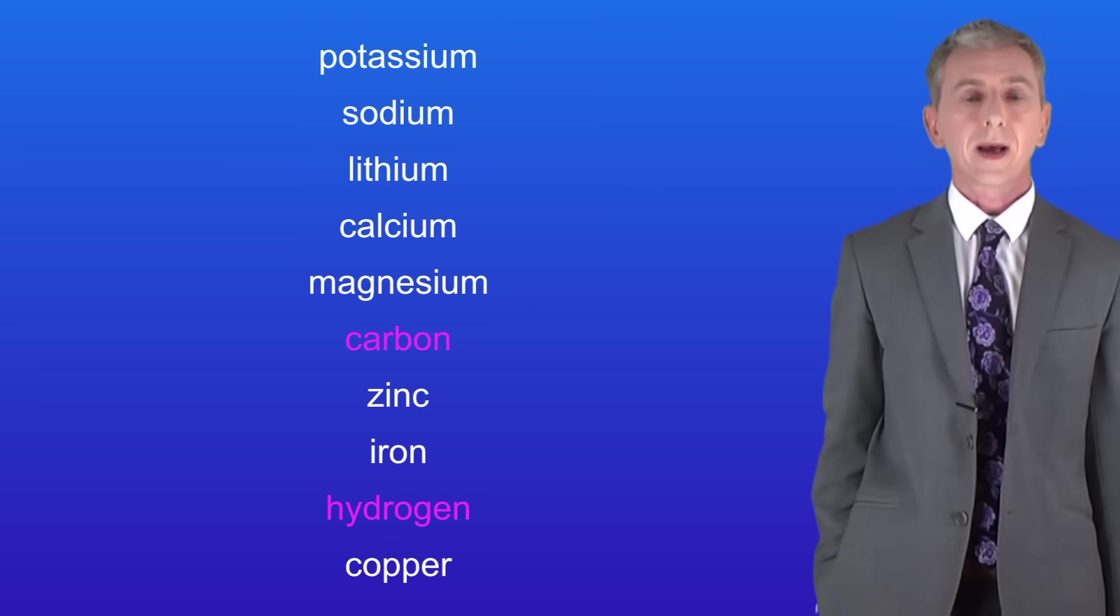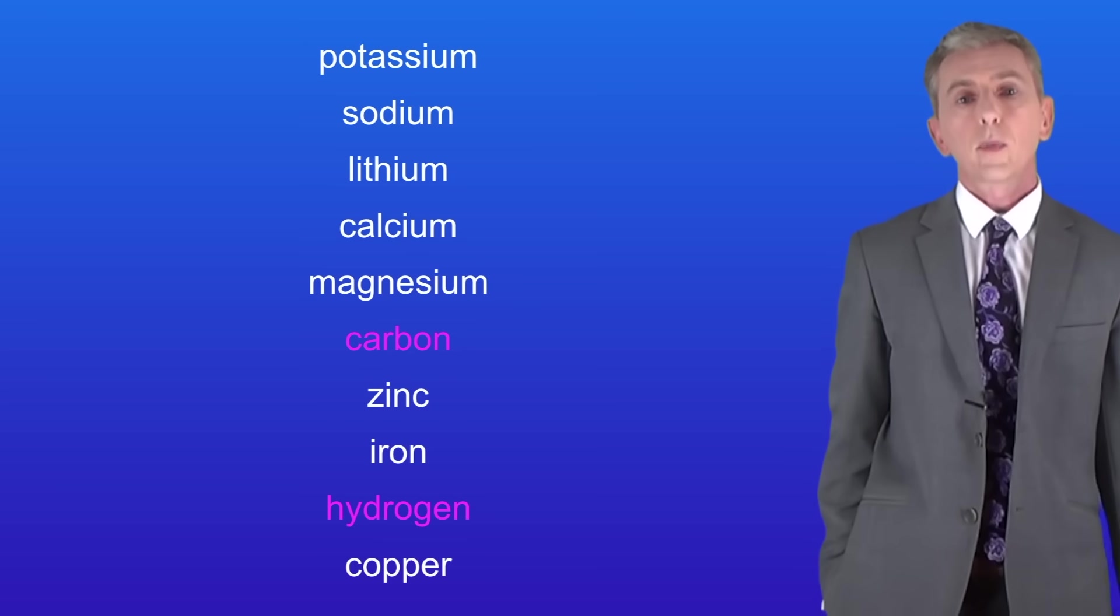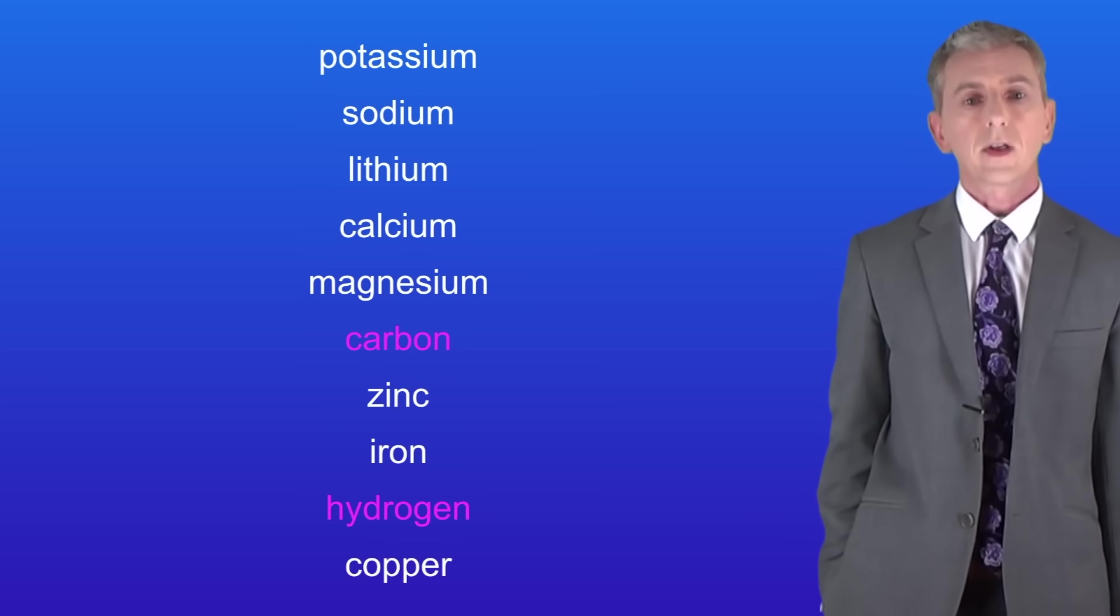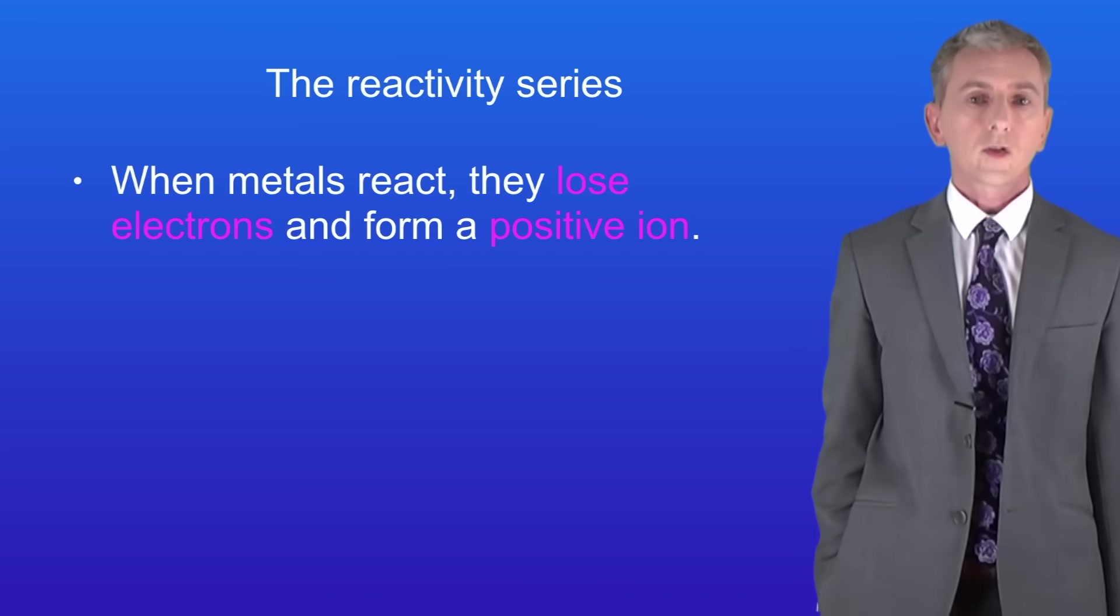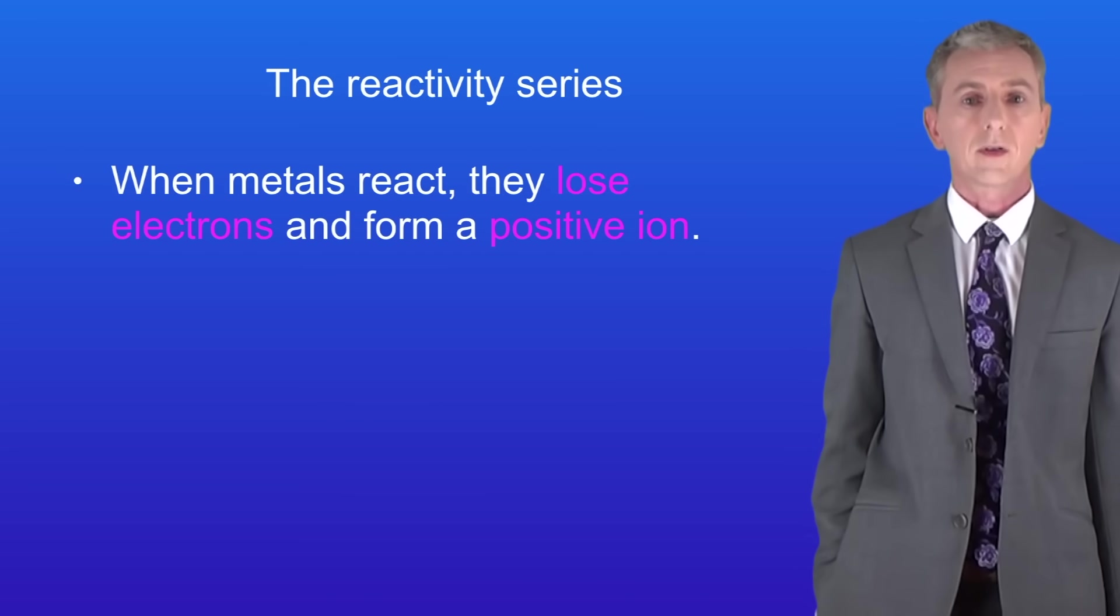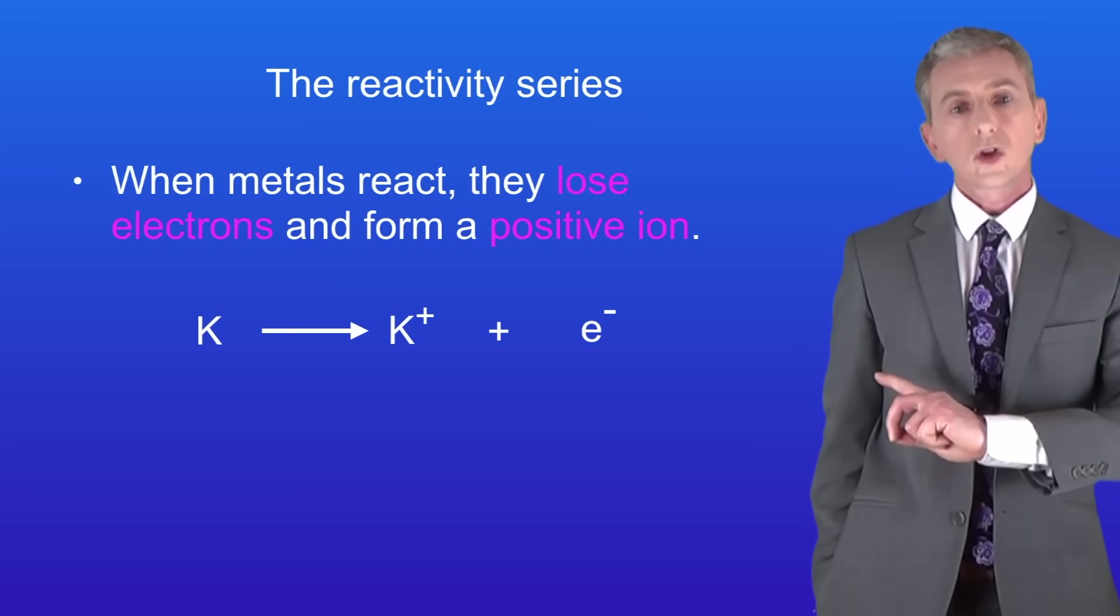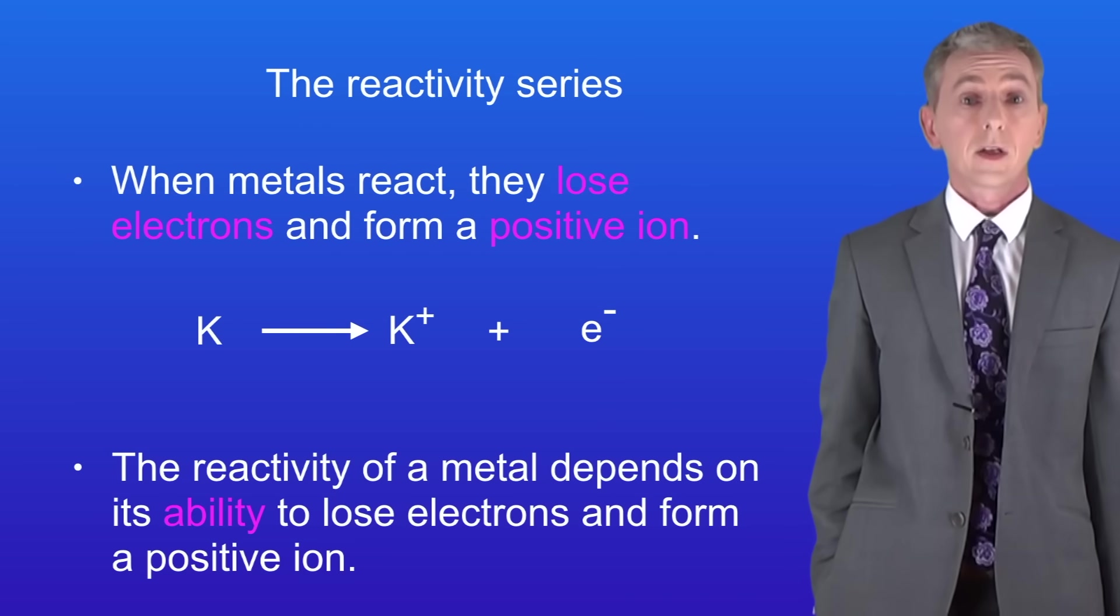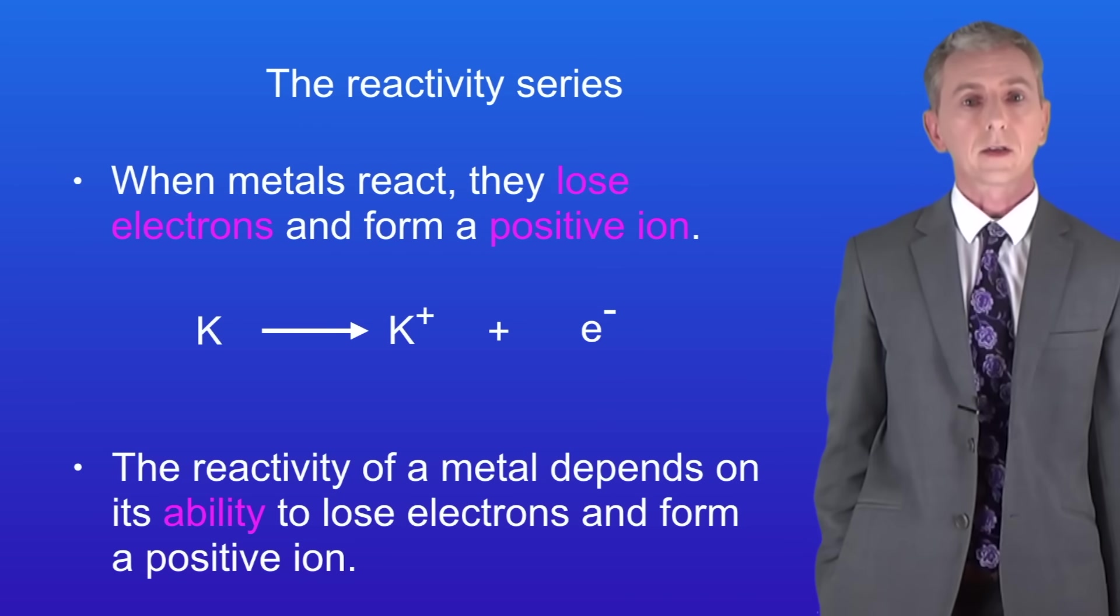Okay so we've seen that different metals have got different reactivities but what actually determines how rapidly a metal reacts? Let's look at this now. The first key factor is that when metals react they lose electrons and they form a positive ion. This shows potassium forming the potassium ion K+ and losing one electron. The reactivity of a metal depends on its ability to lose electrons and form a positive ion.